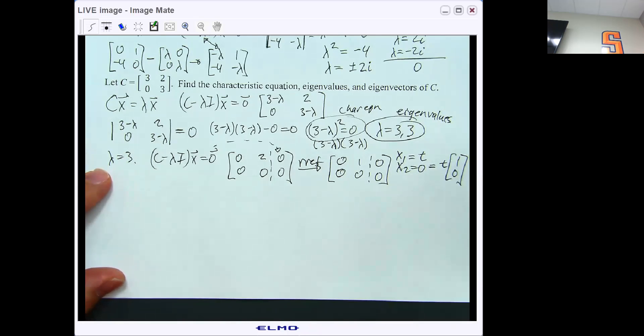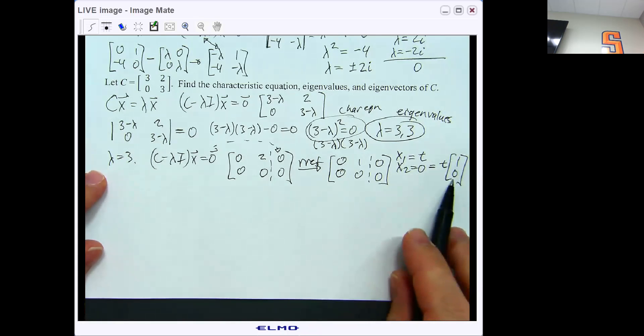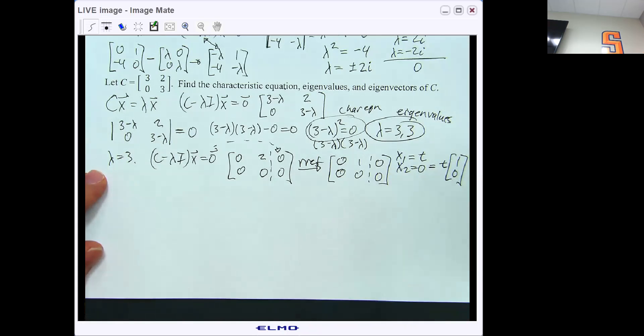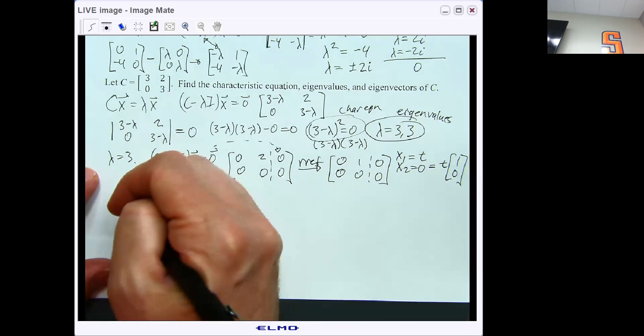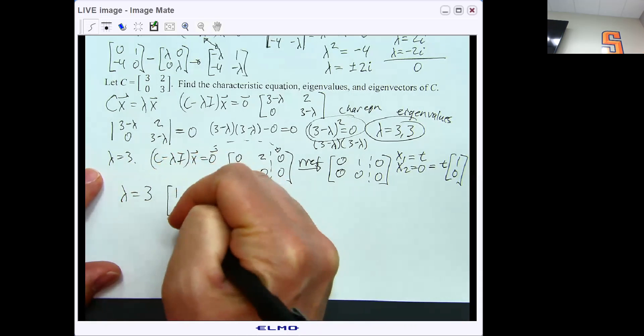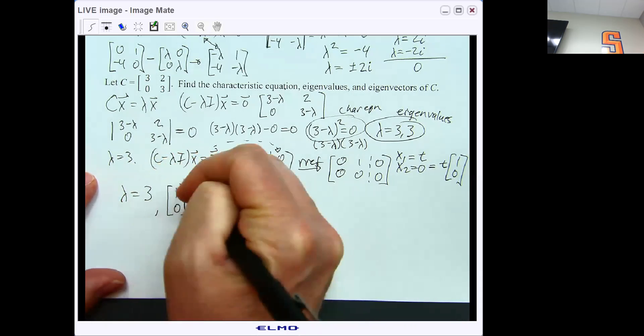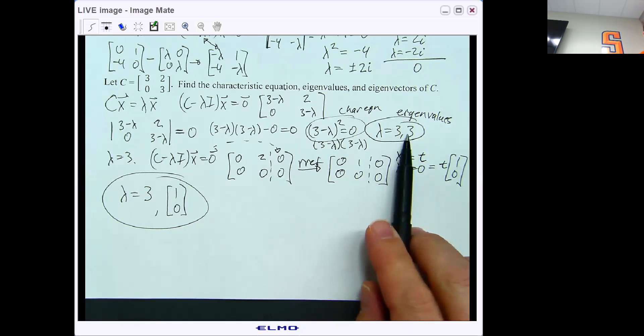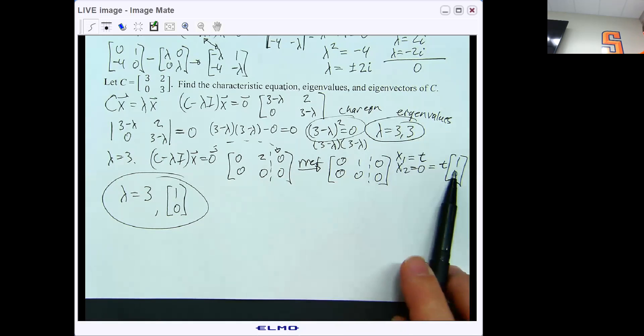Now notice that this is T times the vector [1, 0]. Uh-oh. We only have one eigenvector to go with our repeated eigenvalues of 3. So our eigenvalue eigenvector pair is lambda equals 3 and the vector [1, 0]. So this will come into play a little bit later, but we had two eigenvalues, including repeats, but only one eigenvector.